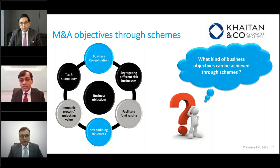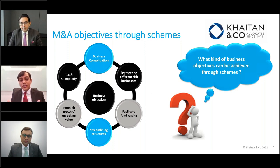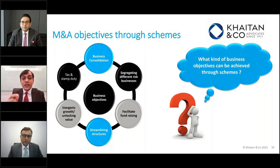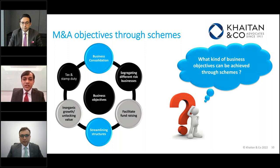Another objective is segregation. Historically, businesses have been done in a single entity, but because of different commercial objectives, you may need to segregate businesses with different risk and reward profiles. A merger scheme is one way to segregate businesses and create two separate entities, each housing a different business. For example, sugar companies are looking at segregating the ethanol business from their sugar entity into a different entity because of changes in the business environment and policies, where the ethanol business may attract investors ready to give different multiples.